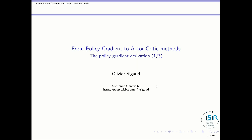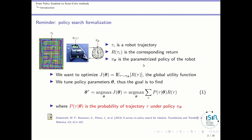In this video I will start explaining how one can use the policy gradient to perform policy search. Let's first formalize the problem. Consider that we have a robot and we want the robot to collect as many balls as possible, whatever the situation on a tennis court.